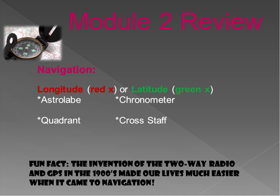That was module one. Module two is all about navigation. We want to talk about tools that measure longitude versus latitude. Here's how I remember it: latitude has the 'A' sound in it. The words for tools that measure latitude all have A's in them — the astrolabe measures latitude, the quadrant measures latitude, and the cross staff measures latitude. The only one that measures longitude is the chronometer — longitude has an O, and chronometer has an O. GPS and the two-way radio came along much later as inventions that made navigation much easier.